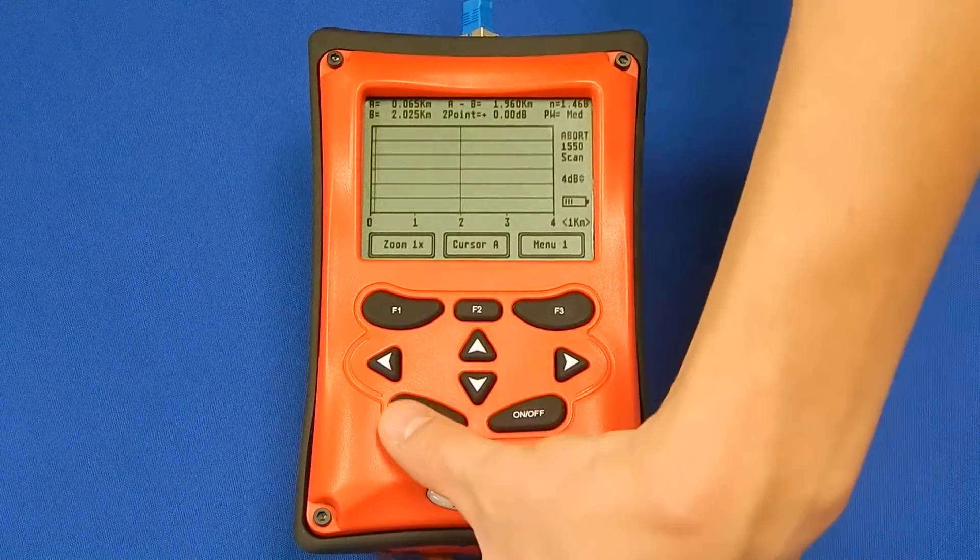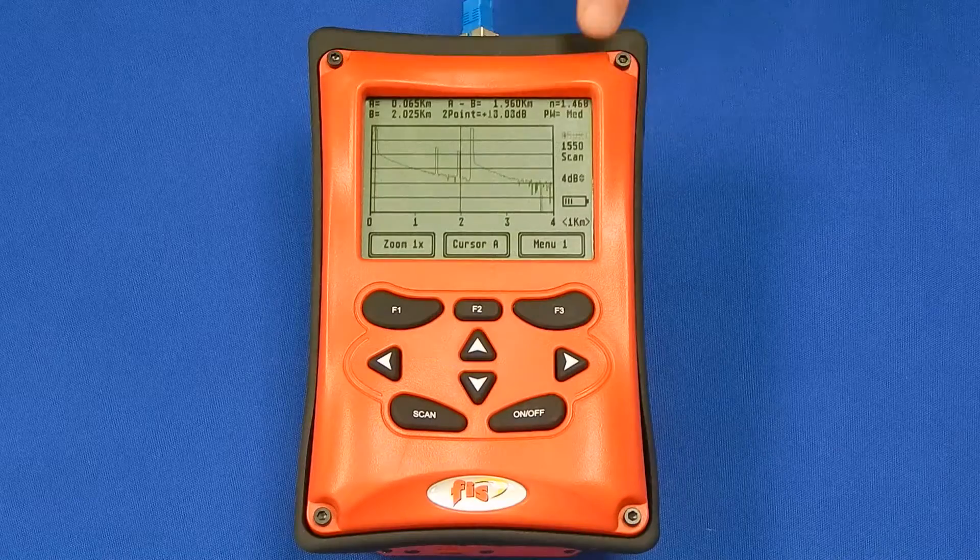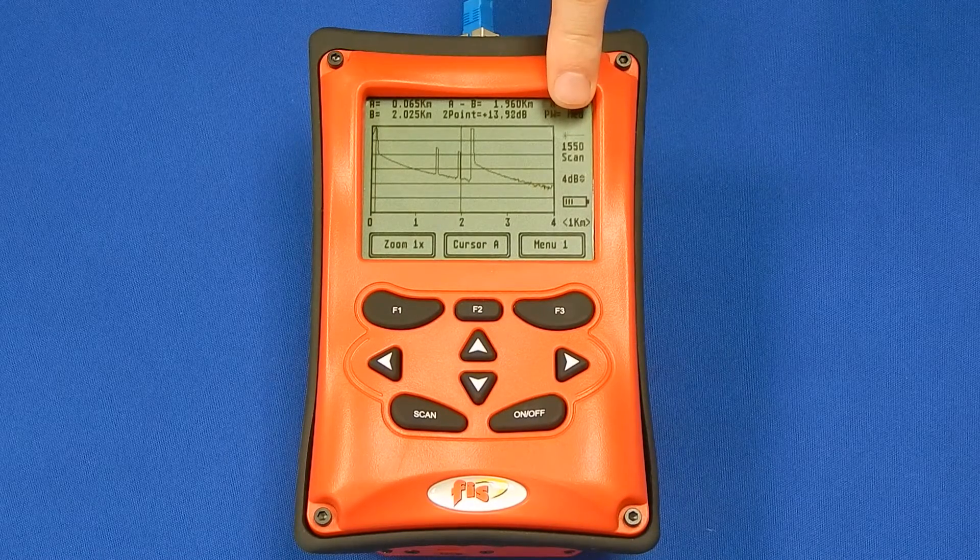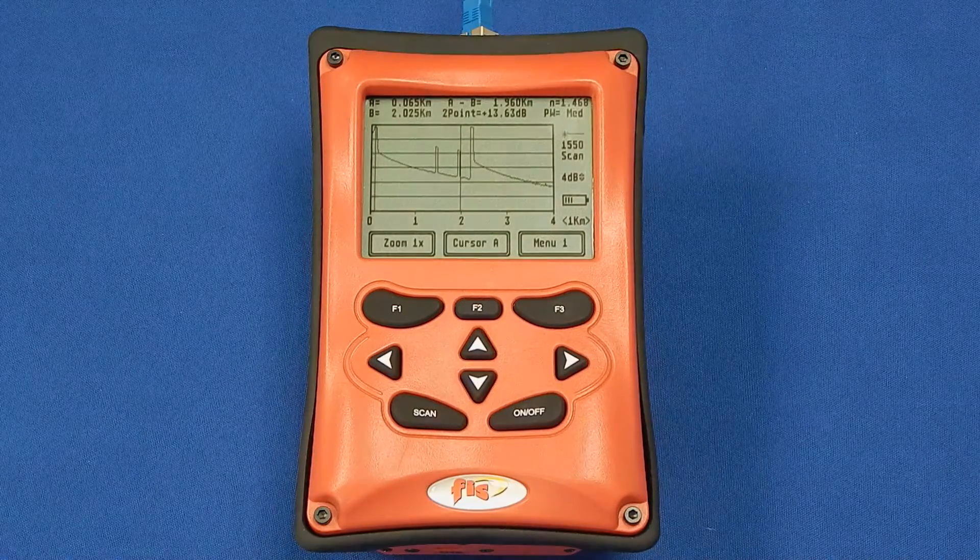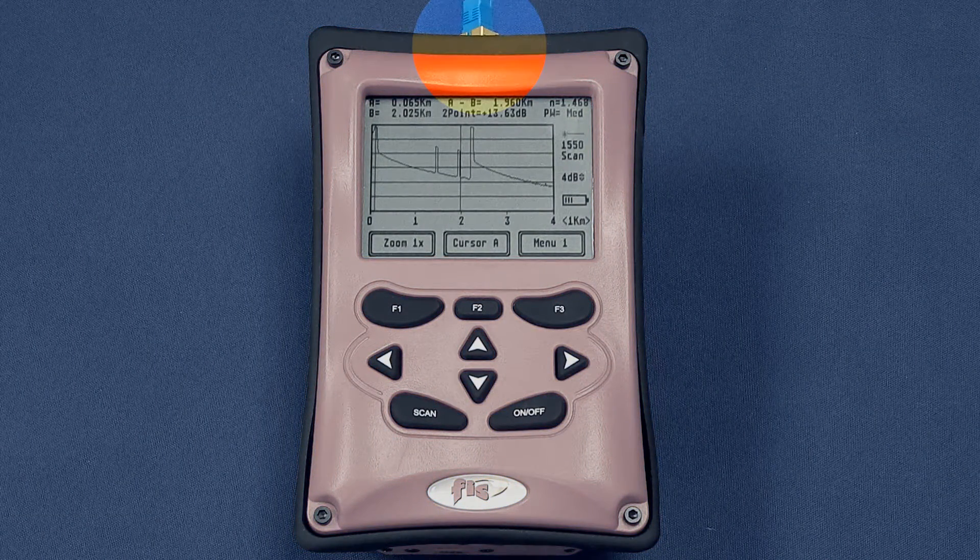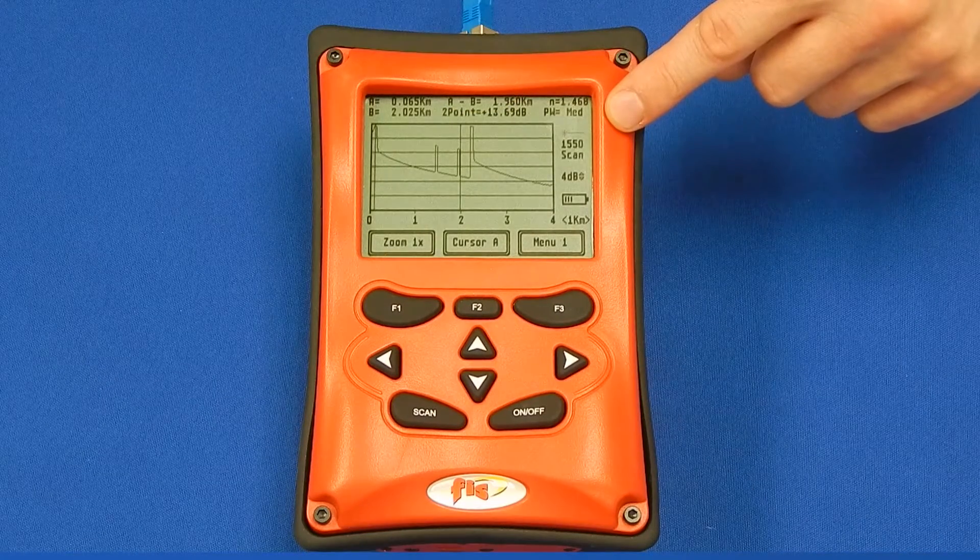When all ports have been cleaned, simply press the scan button to begin the trace. The OTDR will show a pulse above the wavelength while under test. Do not remove the connection while the light is flashing. The word done will appear when the test is complete.